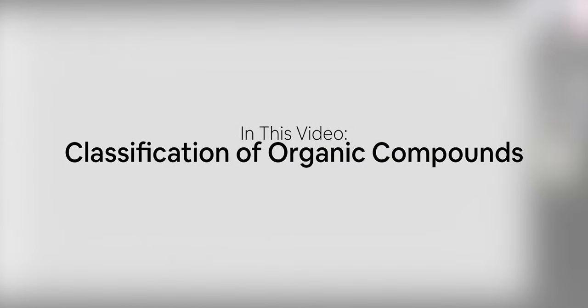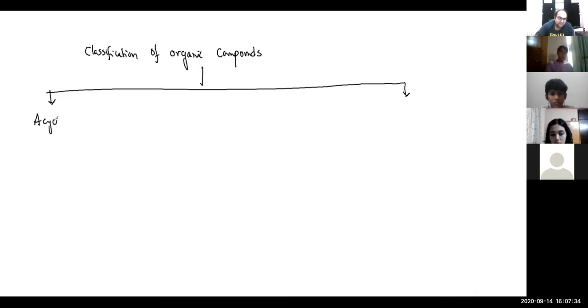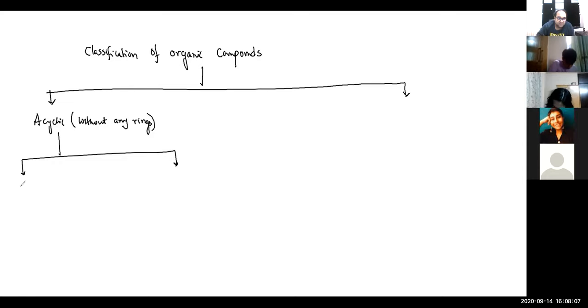Classification of organic compounds. Acyclic - straight chain or other straight chain without any rings. So acyclic is straight chain and branched chain.